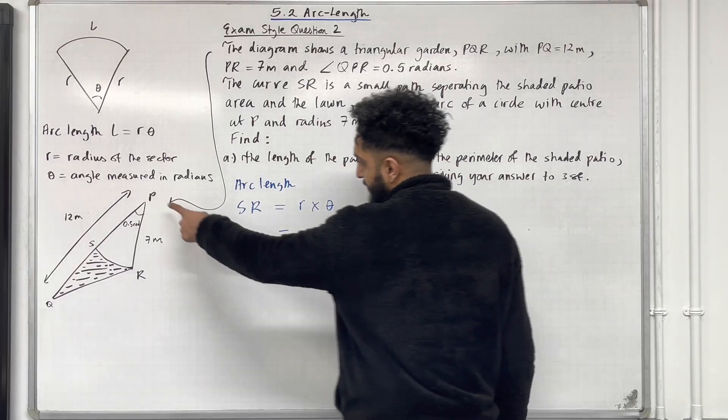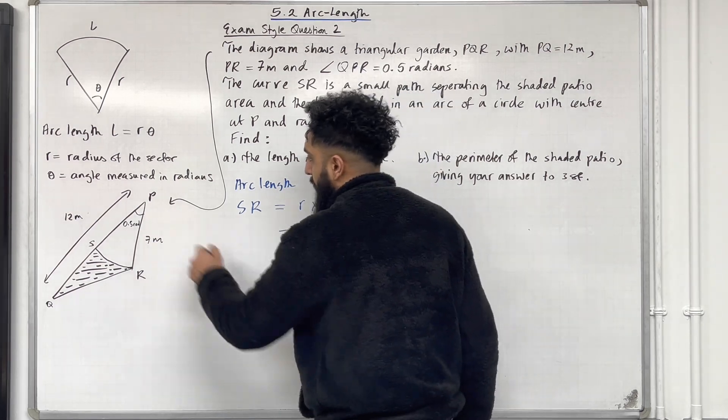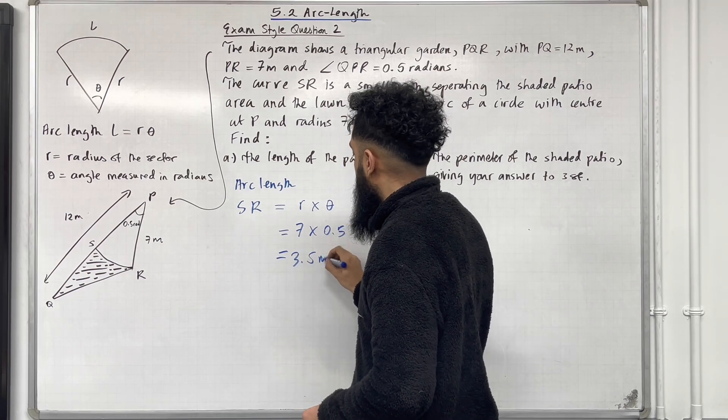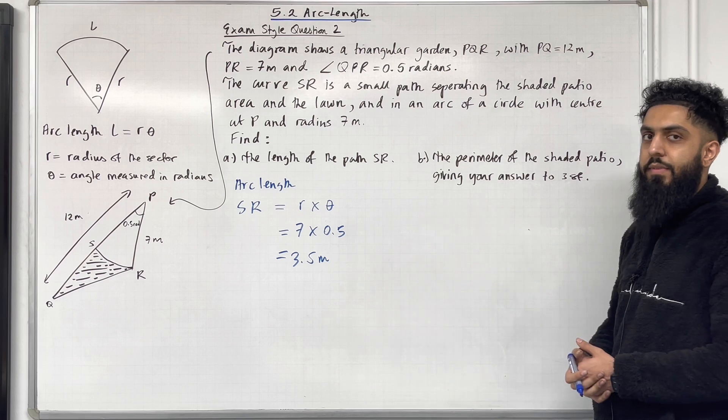So the radius of the sector is 7. We can take 7 and we can multiply it by 0.5 which is the theta. This gives me 3.5 metre. Hence the length of the path SR is 3.5 metre.